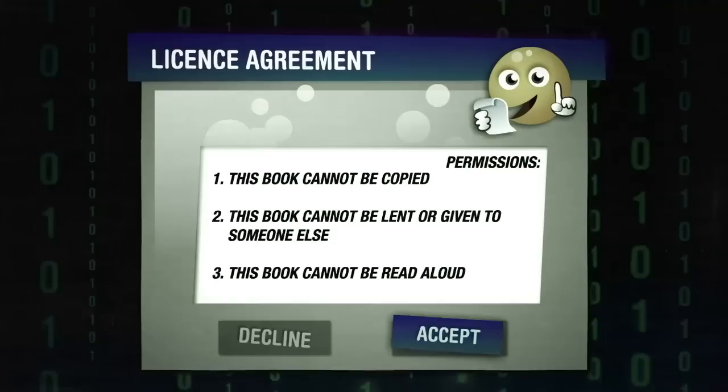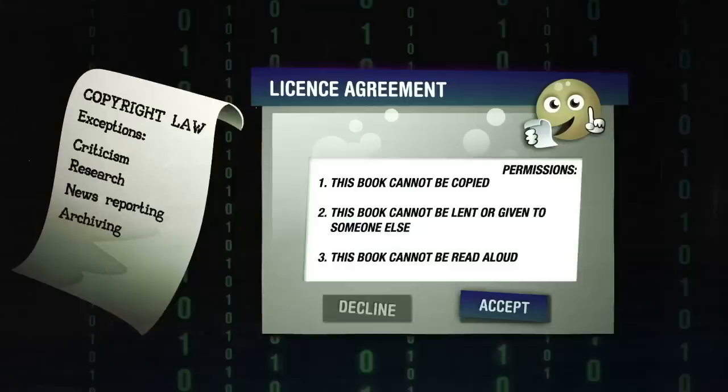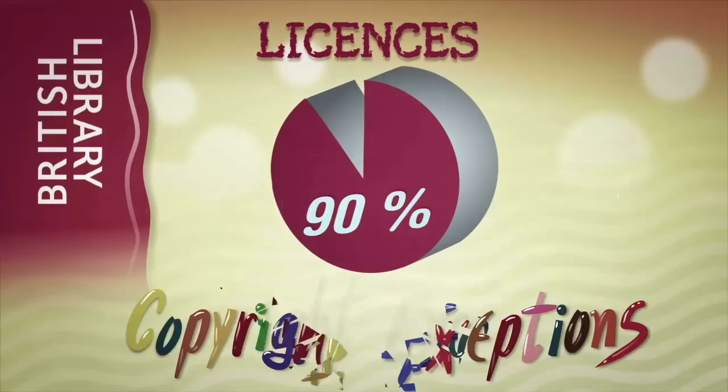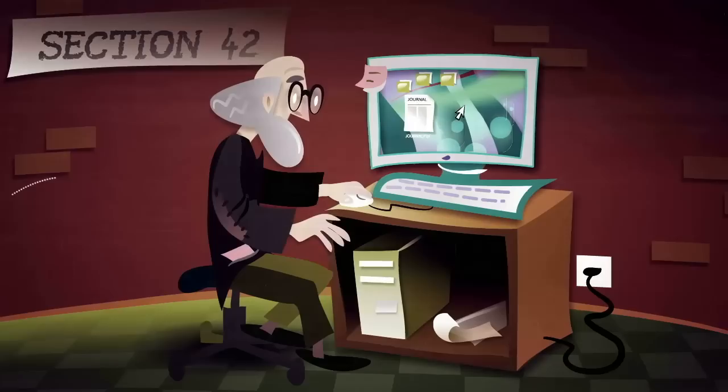The problem is that many of these licences are more restrictive than copyright law itself. The British Library, for example, analysed 100 licences and found that 90% of them did not respect copyright exceptions. Copyright law enables libraries to copy an electronic journal, but the licence they have to accept may include restrictions about copying.